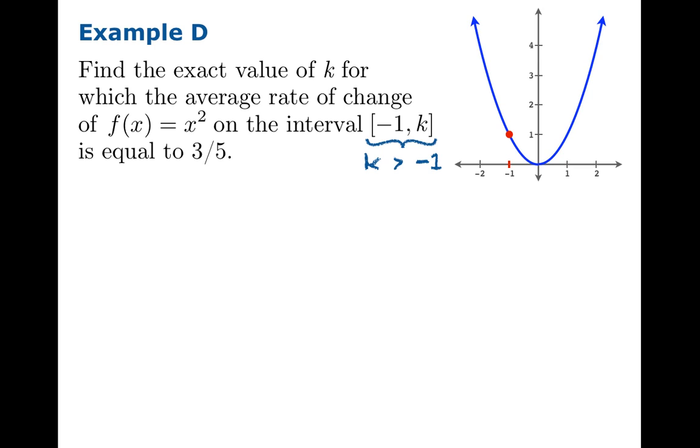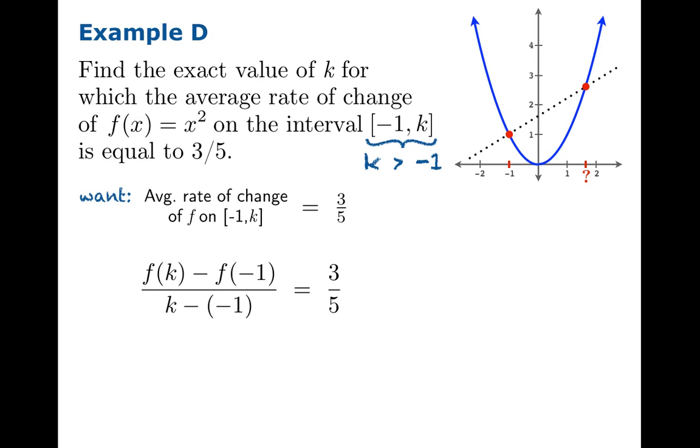We know there's going to be a solution. And we know that because if we drew a line with slope 3 fifths through the point negative 1, 1, you can see the point you need for the interval to have an average rate of change equal to 3 fifths. And you know there can only be one solution because you know what the graph of x squared looks like. How do we go about solving this? One strategy is to write out our goal. Our goal literally is to find the average rate of change on this interval from negative 1 to k, and we want it to be 3 fifths. What's our definition of rate of change? You plug in these endpoints to your formula. What function are we dealing with? It's the squaring function. So f of k is k squared. f of negative 1 is 1. And then the denominator, k minus negative 1, that's actually k plus 1. So now we have an equation.